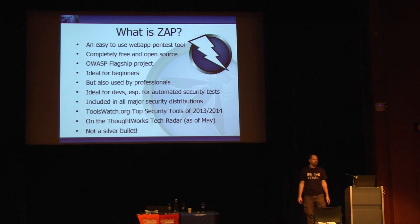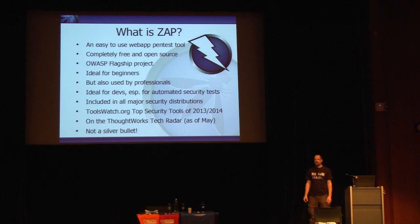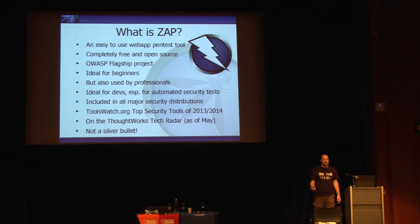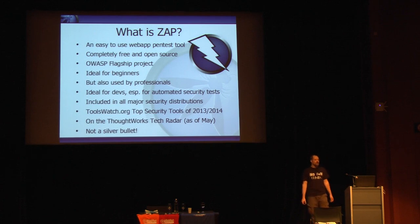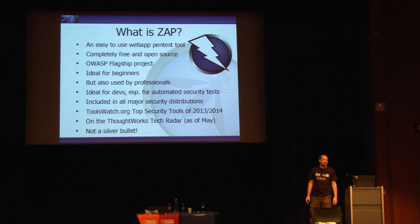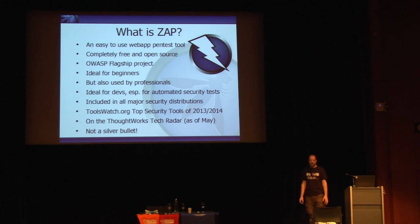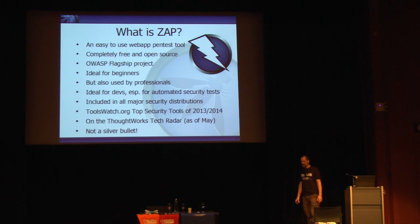ZAP is ideal for developers and functional testers, especially for automated security tests. Someone is talking about this in one of the DevOps tracks later this afternoon. ZAP is included in all the major security distributions like Kali, and it's been the top one or two in the tools watch for the last couple of years. As of May, it's now on the ThoughtWorks Technology Radar — they're saying all businesses should be evaluating ZAP. Of course, in security there are no silver bullets, and ZAP certainly isn't one of those.